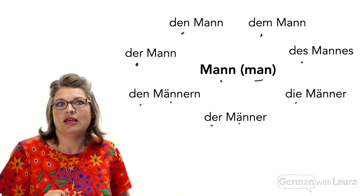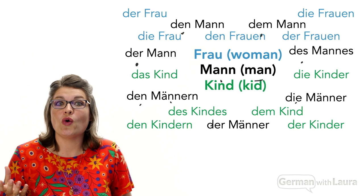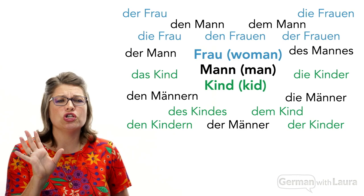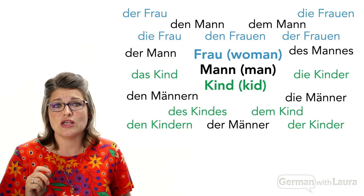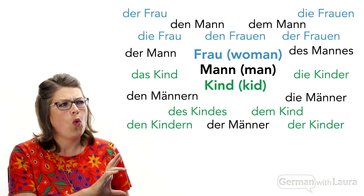Then add to that, if you want to learn woman, five different versions of that. Child, six different versions. Why are German nouns so hard? Rather than just telling you that you're going to have to memorize these five to seven different versions of every German noun — there are only thousands of them you'll need to know — in this video we are going to look at some shortcuts for understanding what these changes are, why they're happening in German, and how you can do them yourself.